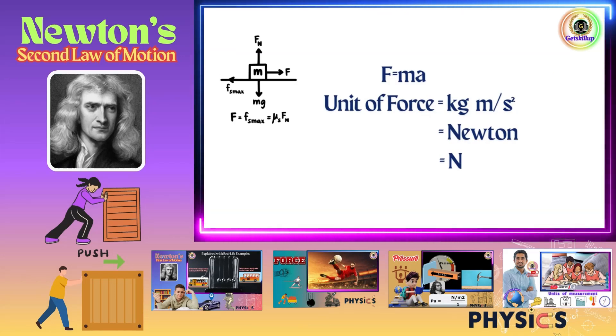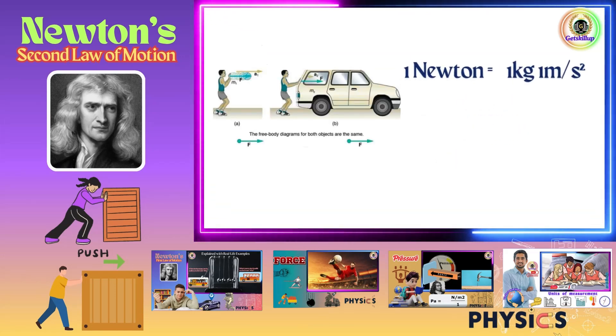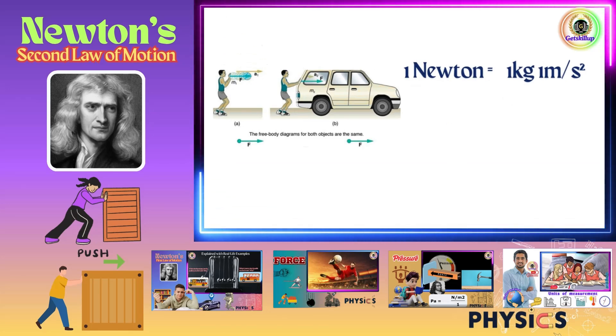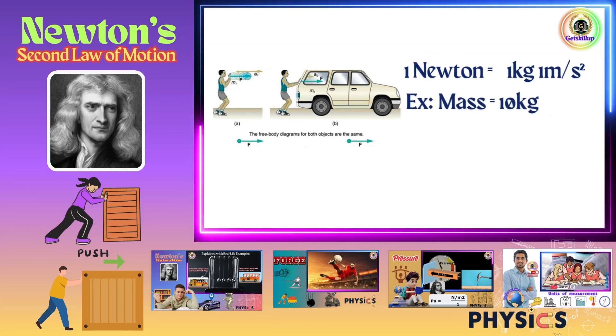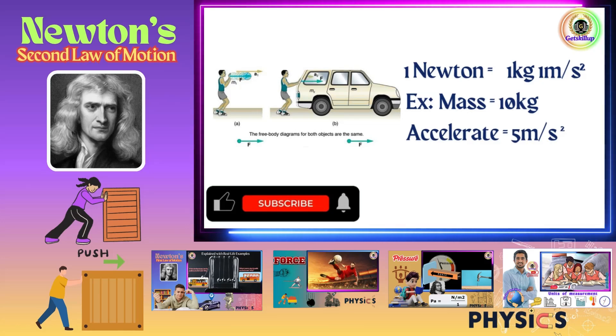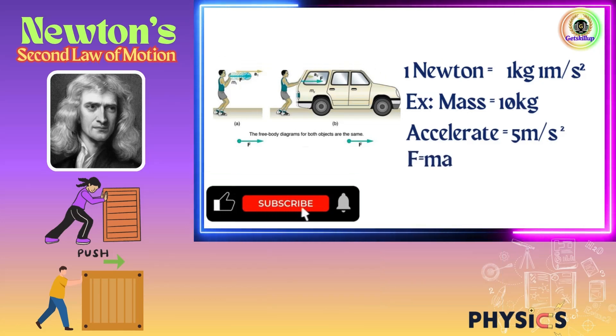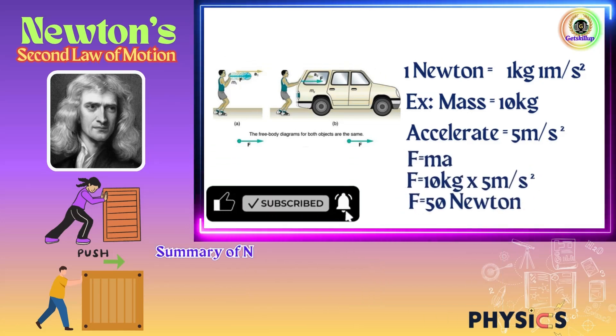Definition of 1 Newton: 1 Newton is the force required to accelerate a 1 kg object by 1 m/s². Example: If an object has a mass of 10 kg and you accelerate it at 5 m/s², force equals 10 times 5, which is 50 Newtons.